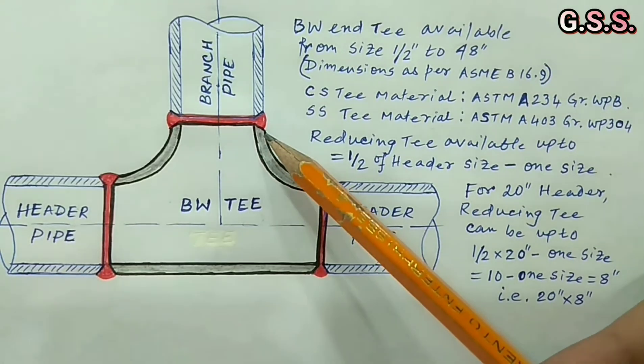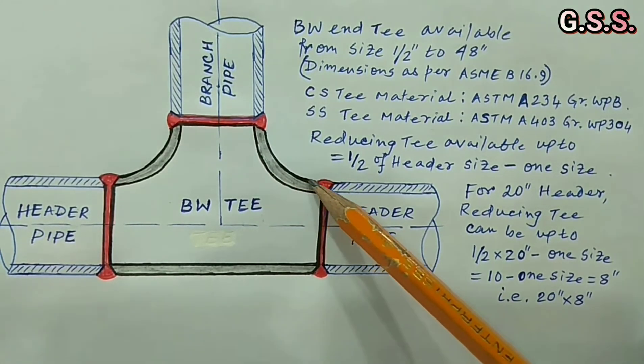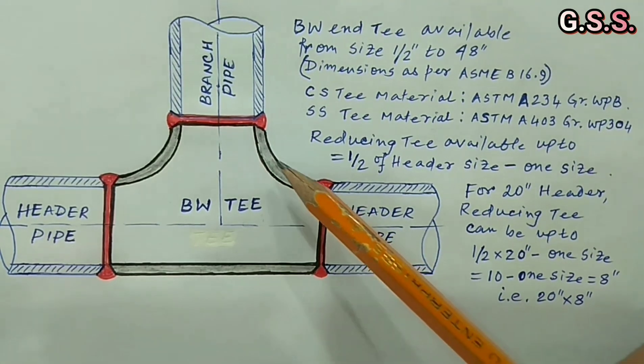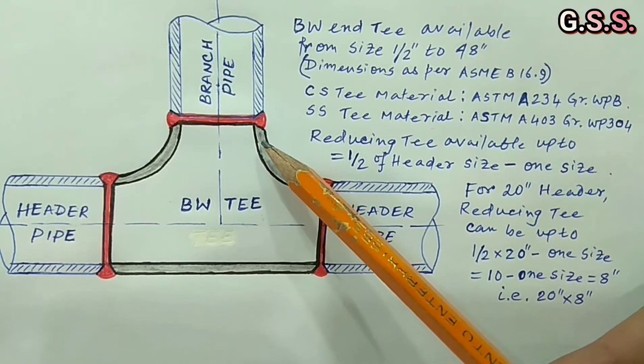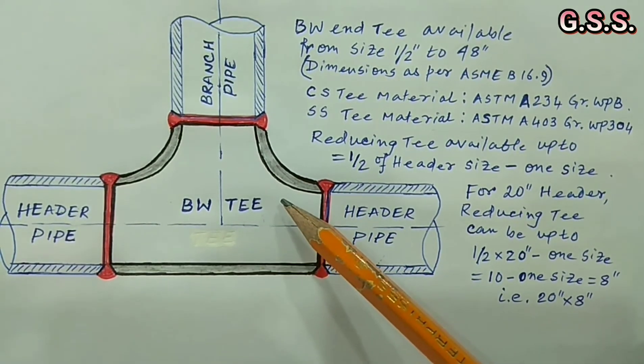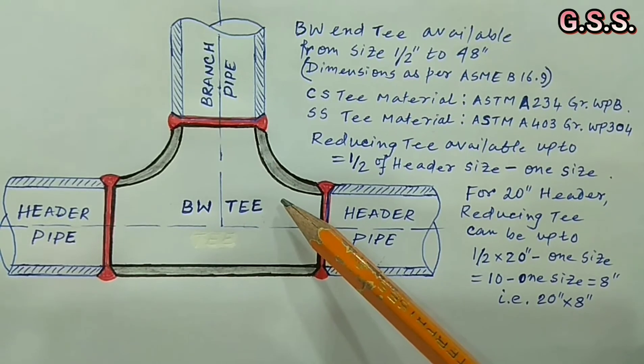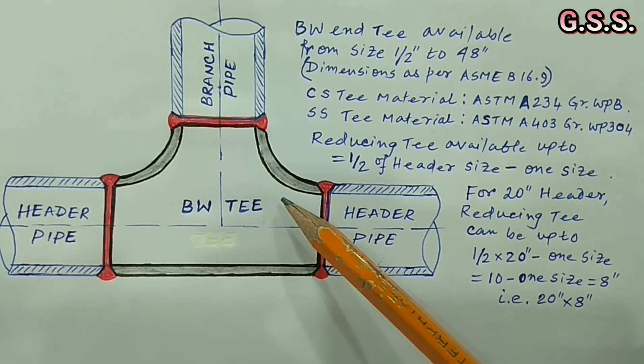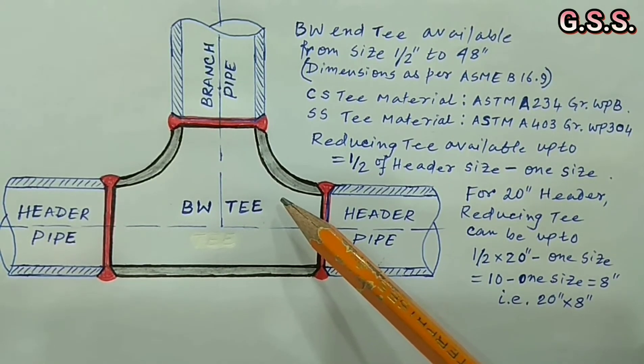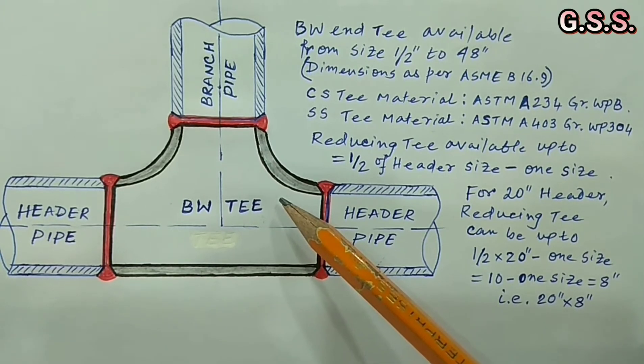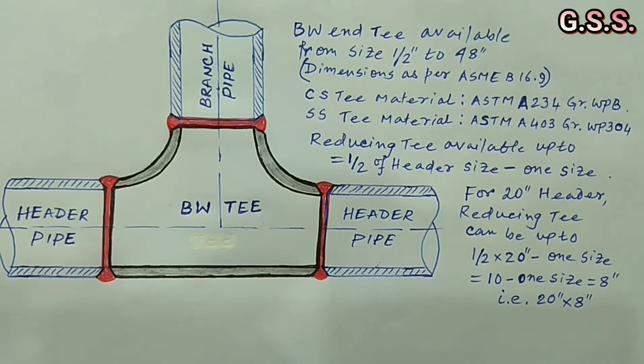Also due to the curved shape of the T branch, less stress is generated at T branch and SIF means stress intensification factor of a T is very low. So branch connection with a T can take more piping load and moment and chance of failure is less.